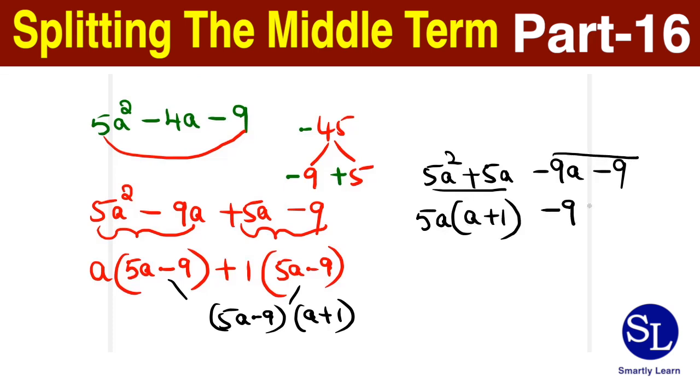Here I take minus 9 outside, so you get to have a plus 1. Now I take the a plus 1 common, you get a 5a minus 9. So whichever order you write the middle terms, you will still end up getting the same answer. So 5a squared minus 4a minus 9 is equal to a plus 1 into 5a minus 9.